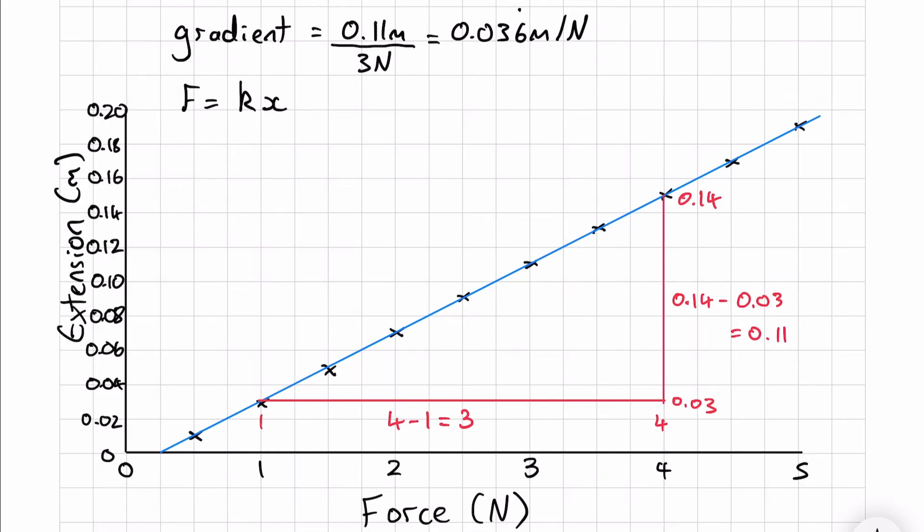Since Hooke's law is force equals spring constant times extension (F = kx), we actually need the spring constant in newtons per meter. The gradient we calculated is in meters per newton.